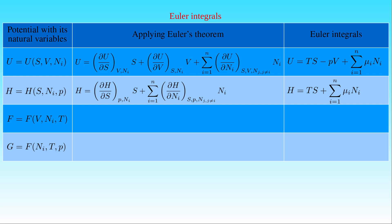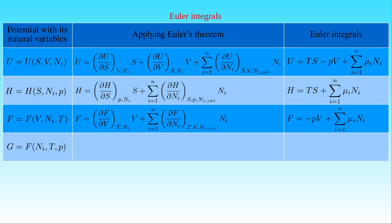The natural variables of the free energy F are the volume V, the number of particles Nᵢ, and the temperature T. The free energy is a homogeneous function of degree 1 in its first two variables, so Euler's theorem gives F as the partial derivative of F with respect to V at constant T and Nᵢ times V, plus the sum of the partial derivative of F with respect to Nᵢ at constant T, V, and Nⱼ (j ≠ i) times Nᵢ. Since the first partial derivative equals minus P and the second equals μᵢ, the free energy F is given by minus P times V plus the sum of μᵢ times Nᵢ.